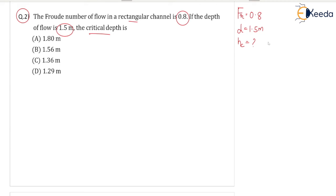What is the formula for critical depth? I'll write here: Hc equals Q squared by g to the power of 1 by 3. This is the equation we are using many times. But here Q is not given, you have to find Q. We know that q equals capital Q by B.